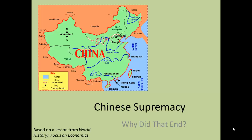Our focus today is on why did Chinese supremacy throughout the world end. They were so far advanced beyond anyone else, and yet they chose to give up a lot of that advantage and let others pass beyond them. So it's important that we look at what happened leading up to that, and then also some of the factors that happened afterwards.